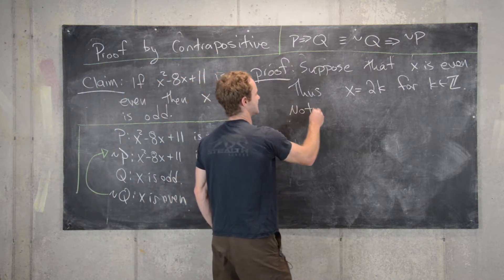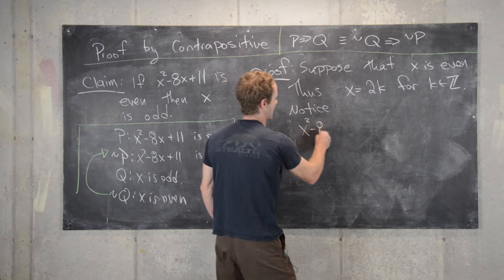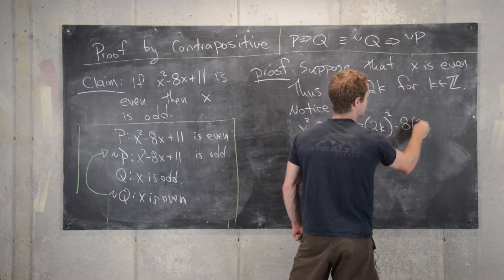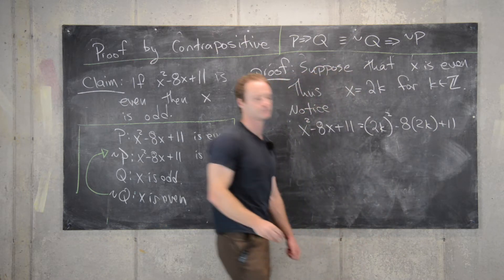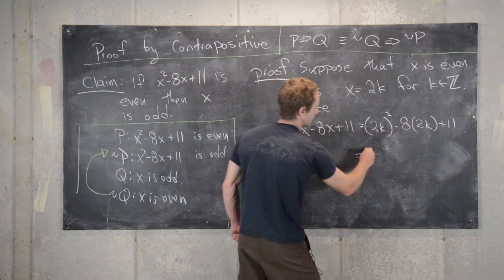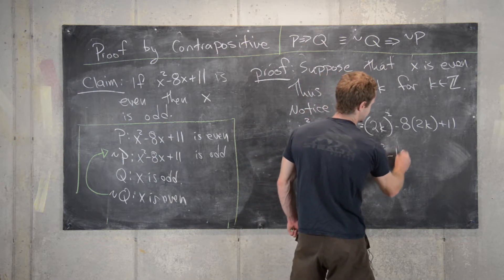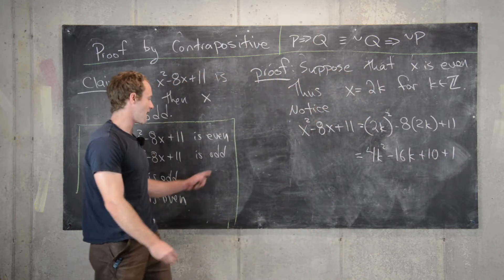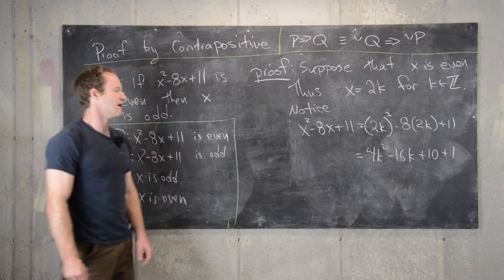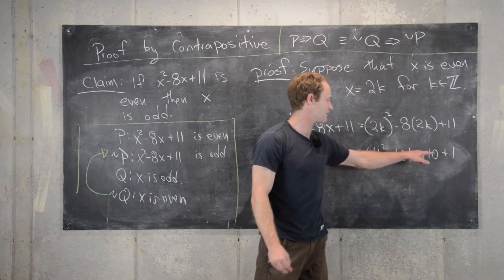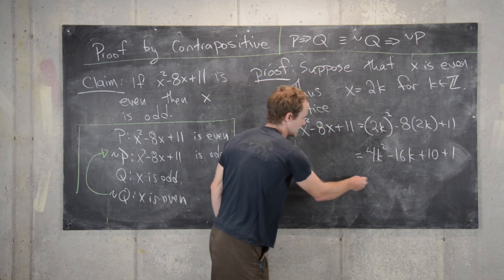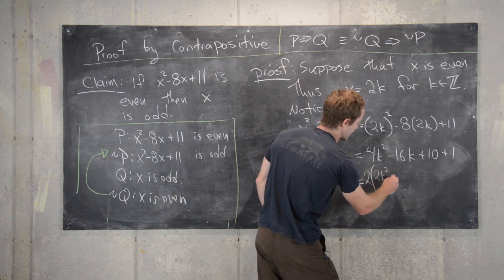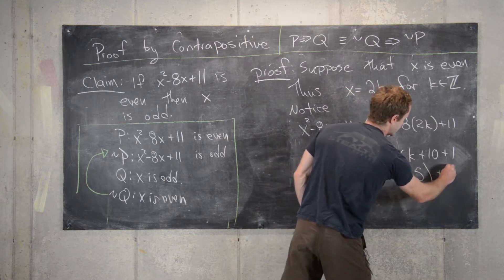Notice that x squared minus 8x plus 11 is now (2k) squared minus 8 times 2k plus 11, which is equal to 4k squared minus 16k plus 10 plus 1. I'm splitting up 11 as 10 plus 1, keeping in mind that I'm trying to show this is odd — I have an even number plus even number plus even number plus 1. Now I factor out a 2, giving 2(2k squared minus 8k plus 5) plus 1.